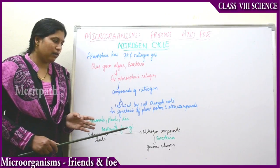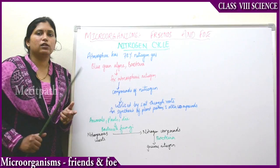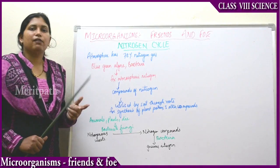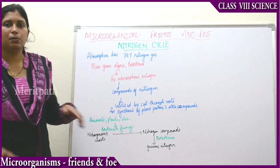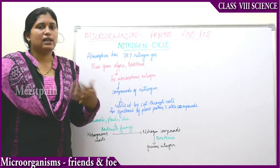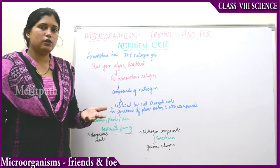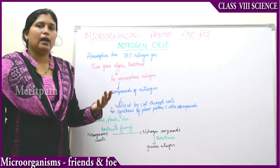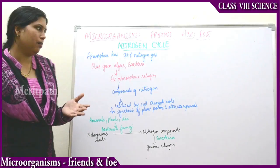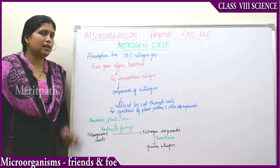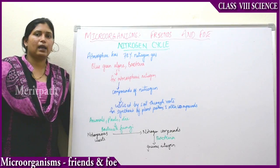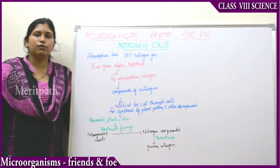This is how the nitrogen cycle happens. In this way, the percentage of nitrogen in the atmosphere remains constant — there will be no change because the cycle is continuously going on. Nitrogen changes its form into compounds and then retains back its gaseous nitrogen form. This is about the nitrogen cycle, and thereby we complete the chapter of microorganisms: friends and foe.